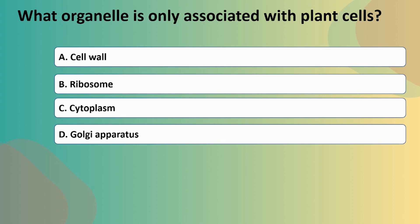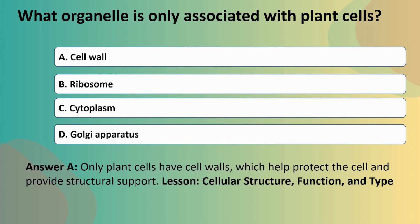Question four: what organelle is only associated with plant cells? A: Cell wall. B: Ribosome. C: Cytoplasm. D: Golgi apparatus. If you've memorized your cell organelles, it's pretty clear that the best answer option is A, cell wall. That's because only plant cells have cell walls, which help protect the cell and provide structural support.